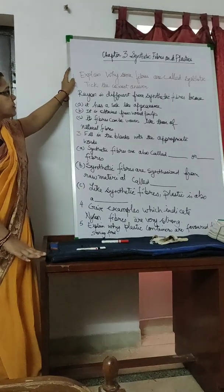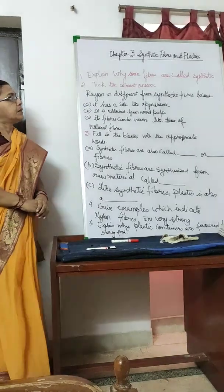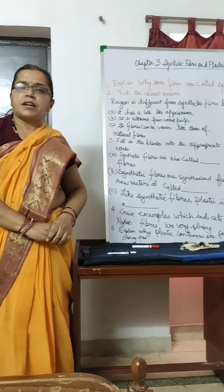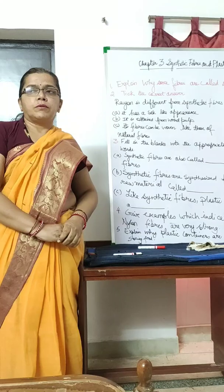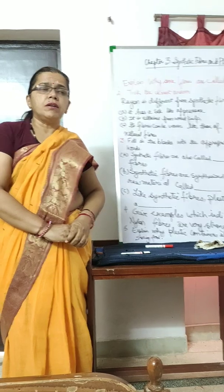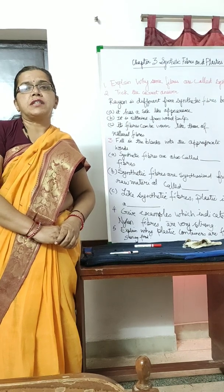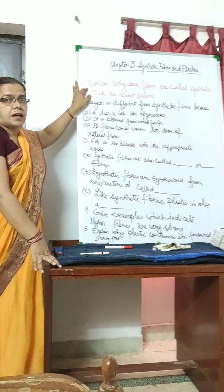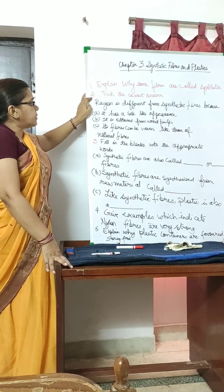Question one: Explain why some fibers are synthetic. Natural fibers are those obtained from natural resources like cotton plants, jute plants, silkworms, and sheep as wool. Those that are artificially synthesized and man-made are regarded as synthetic fibers, as they are chemically produced.